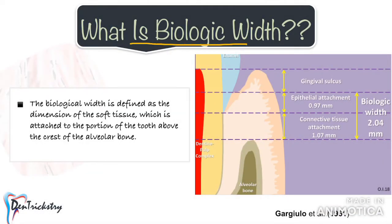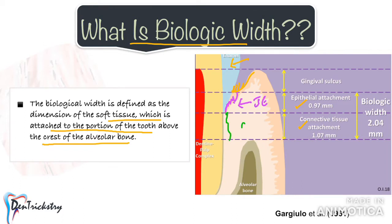First we shall discuss what biologic width is. It is defined as the dimension of the soft tissue which is attached to the portion of the tooth above the crest of the alveolar bone. This soft tissue comprises the connective tissue and the junctional epithelium. For better understanding, let us take a look at this picture. This is the crown, this is the sulcus, just below the sulcus we have the junctional epithelium and the connective tissue, and then the bone. So this part is your biologic width.